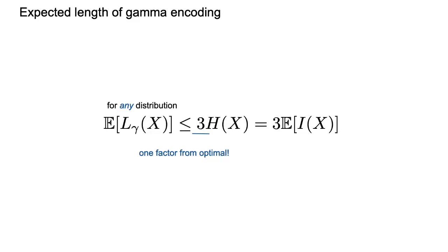If an encoding has the property that it is optimal within a constant factor for any probability distribution, that's called a universal encoding. An example of an encoding that is not universal is the unary encoding, because it's only optimal when the probability distribution is geometric — negative powers of two. The gamma encoding, however, is a universal encoding. This is quite a remarkable feature.